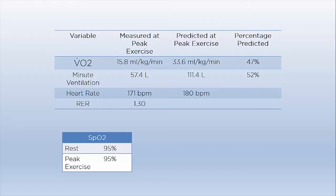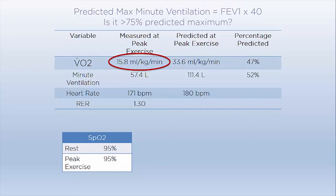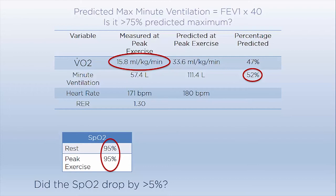Let's take a look at this example. Is the peak V̇O2 normal? It is 15.8 milliliters per kg per minute and is abnormally decreased. We have to diagnose the reason for exercise limitation with the help of five variables. Starting with minute ventilation — the predicted maximum can be calculated by multiplying FEV1 by 40. If minute ventilation reaches greater than 75% predicted maximum, the cause is ventilatory. In this case, minute ventilation reached 52% predicted maximum, so the cause is not ventilatory. Next, we look at SpO2 — there is no drop by greater than 5%, so hypoxemia is not the reason the patient stopped exercising.